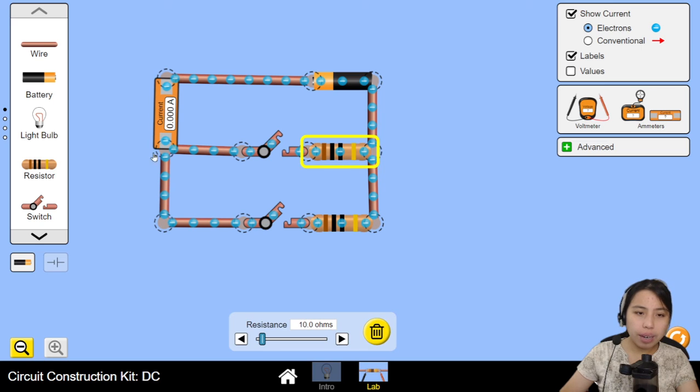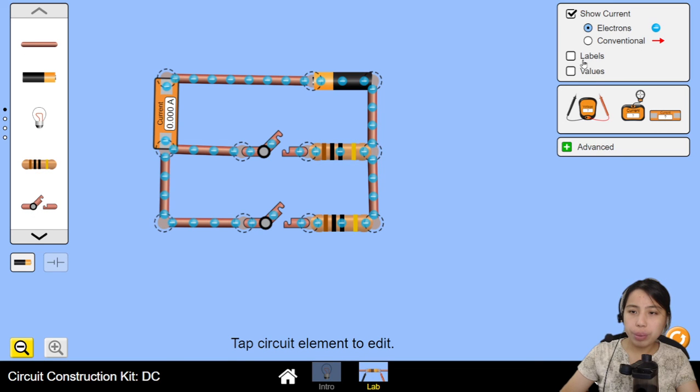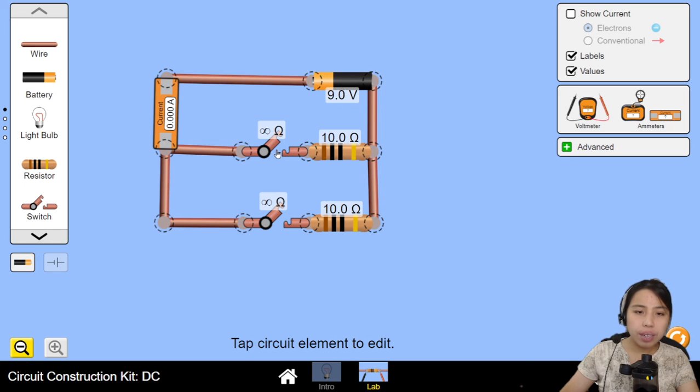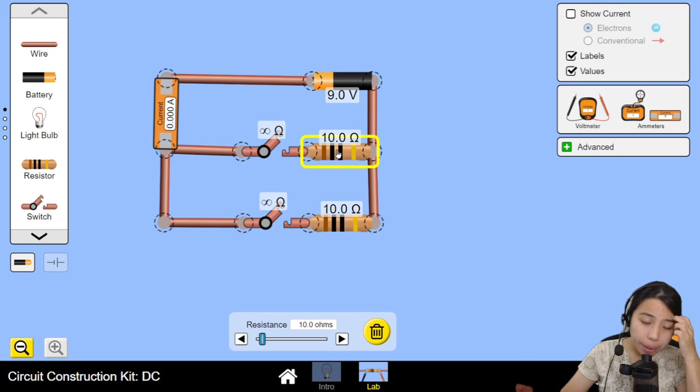So, I guess the R value is fine. I'm going to take away the values. I don't want to see the current. Let's give this circuit a 10 ohm and double this one. So, let's give it a 20 ohm. 2, 1, 0. And we're ready.